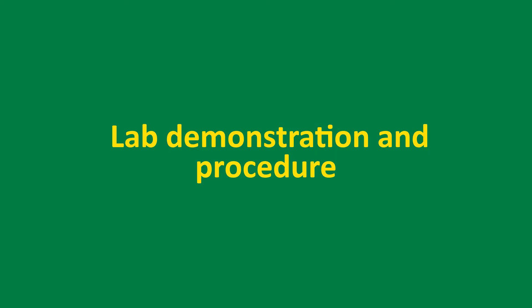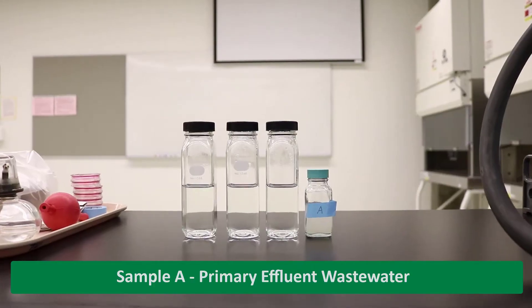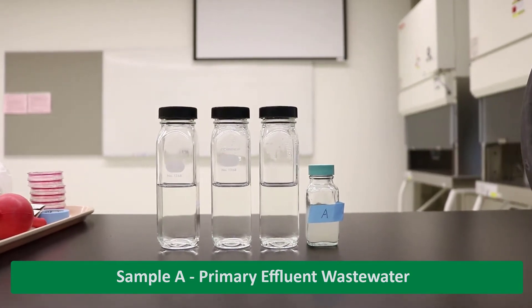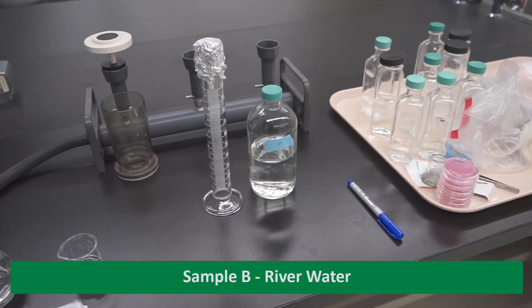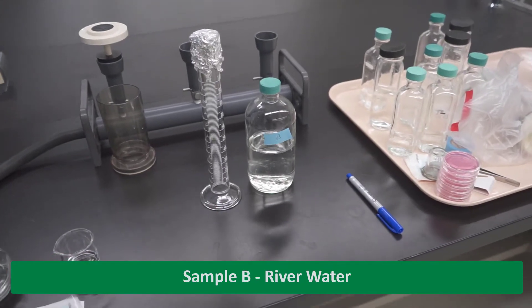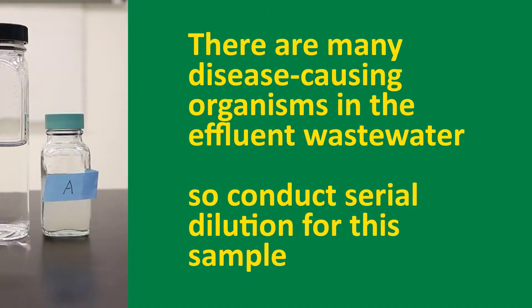Next will be the lab demonstration procedure. First, we will complete the serial dilutions. We have two samples: primary effluent wastewater, labeled as sample A, and river water, labeled as sample B. We know there are many disease-causing organisms in the effluent wastewater, so we conduct serial dilution for this sample.